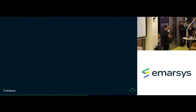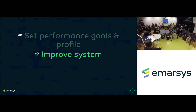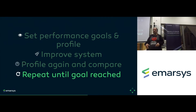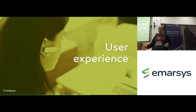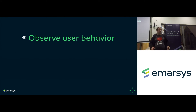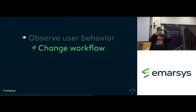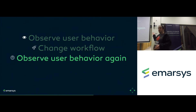For performance: first set your performance goals, do a profile, look at which part of the code is slow, improve that part, profile again and compare — if it's still slow, repeat until the goal is reached. For user experience: observe the user's behavior — give them a task and wait behind them to see what they do without disturbing them. Once observed, you might change the workflow; for example, move a button. Then observe behavior again, and if they find the button quicker, you're happy — then repeat.